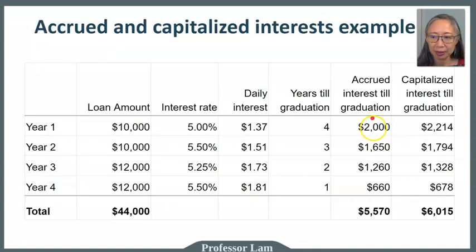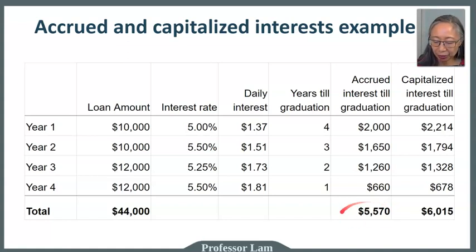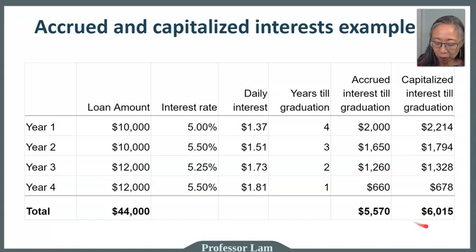Let's take a look at the impact. Let's say you take out $10,000 in year one and two, and $12,000 in year three and four. This is the interest rate for each year, and this is the accrued interest until you graduate. So the total, if you have an unsubsidized loan where interest is accrued, the interest is $5,570. But if you take a private loan where the interest is capitalized, then the balance will keep increasing and your outstanding interest will be $6,000 when you graduate. So that's a difference of almost $5,000.